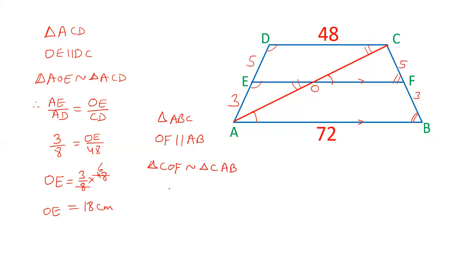Now the triangles are similar. We can say that CF upon CB is equals to OF upon AB. We know that the ratio of CF and CB is 5 to 8. Why? Because CF is 5 and CB is 8. We have to calculate OF. AB is given as 72. Cross multiplication. So OF is equals to 5 by 8 into 72. 8 nines are 72. OF is 45.